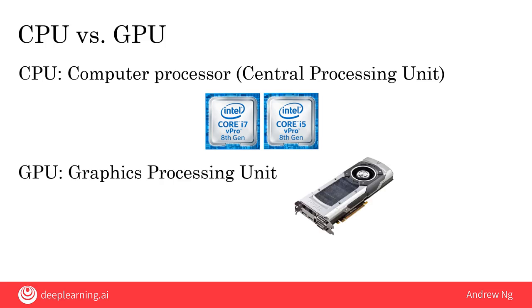GPU stands for graphics processing unit. Historically, the GPU was made to process pictures — so if you play a video game, it's probably a GPU that is drawing the fancy graphics. But what we found several years ago was that the hardware originally built for processing graphics turns out to be very, very powerful for building very large neural networks or very large deep learning algorithms.